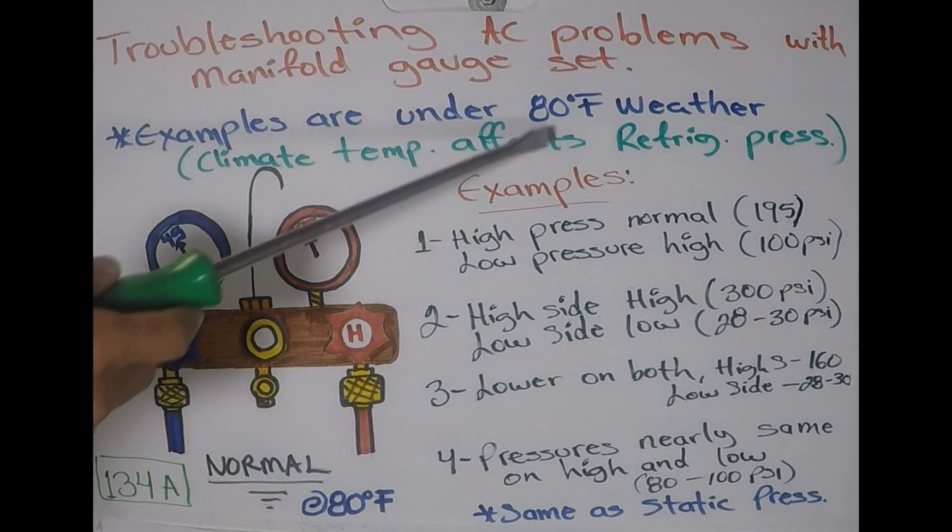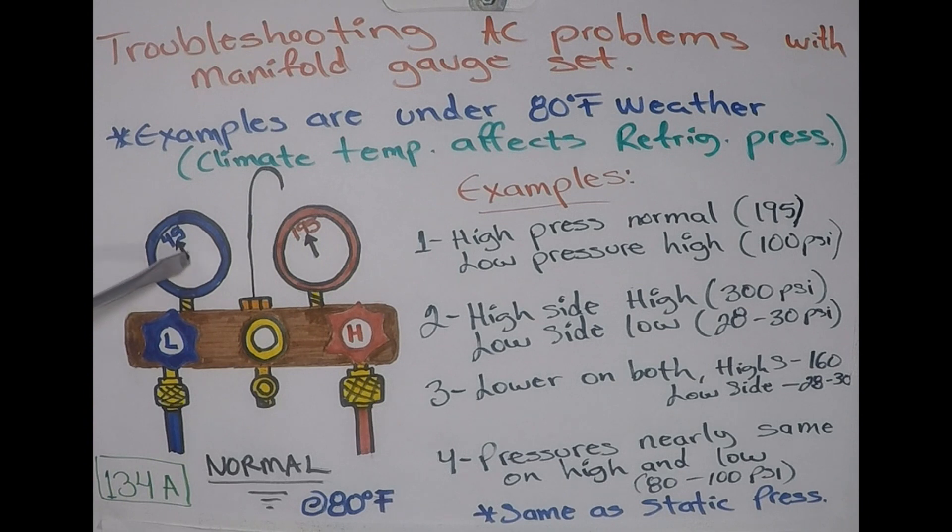So using the chart and going over the 80 degree Fahrenheit weather example, our low pressure side should read around 45 psi and the high pressure should read around 195.